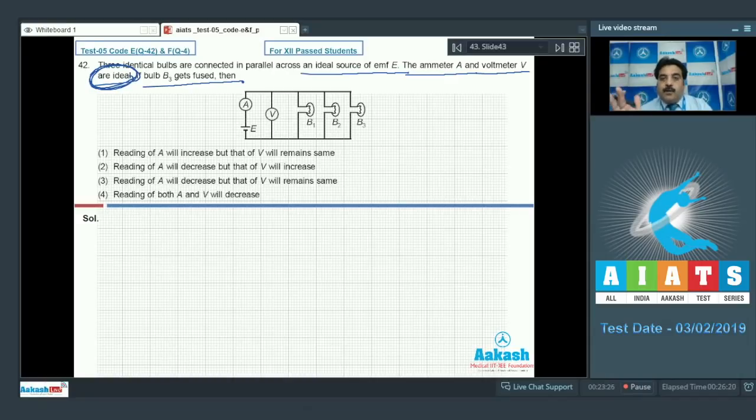capital R. When all bulbs are on, the equivalent resistance is R/3 because all are in parallel. The current is net EMF E divided by resistance R/3, so I equals 3E by R.